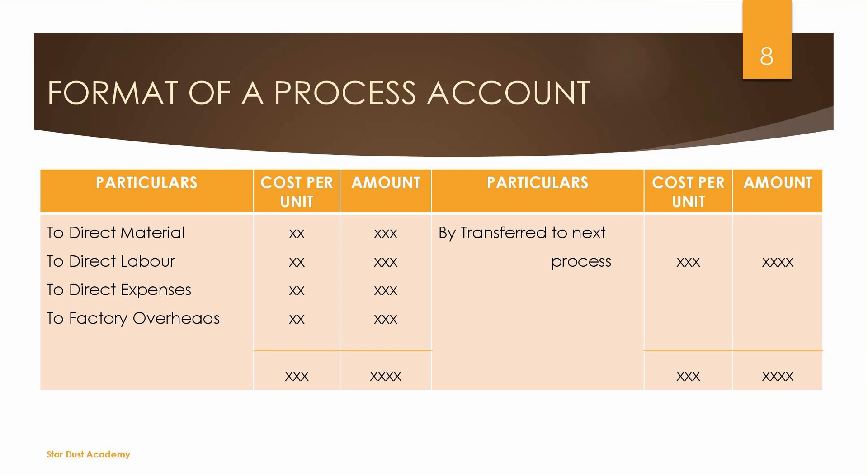Now, regarding the process account structure: on the debit side, you have direct material, direct labor, direct expenses, and factory overheads. The cost per unit is calculated by dividing the total cost by the number of units. The output is then transferred to the next process — from process 1 to process 2, from process 2 to process 3, and finally when finished products are ready, they are transferred to the finished stock account.